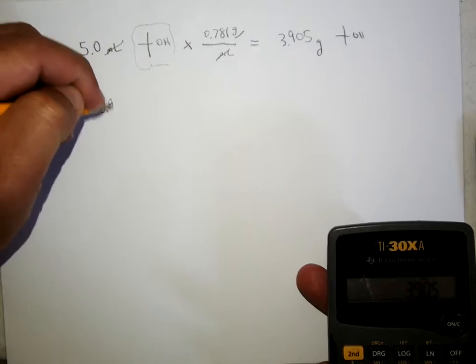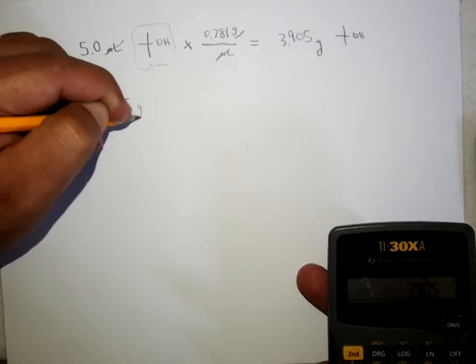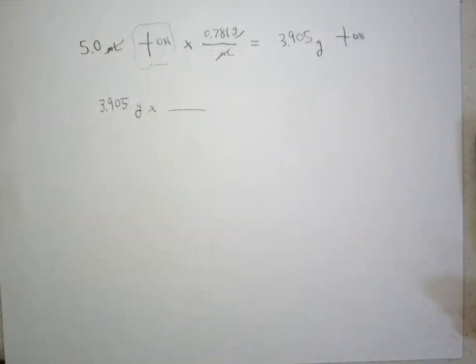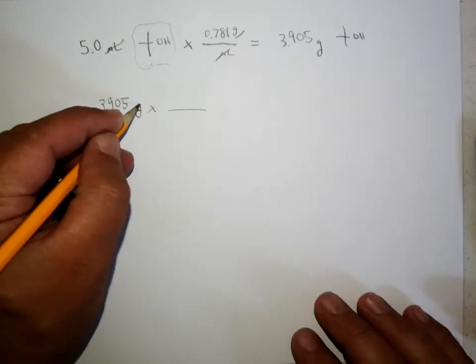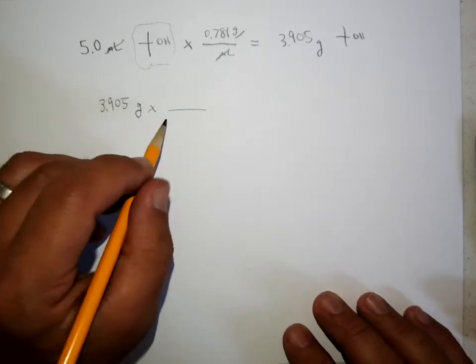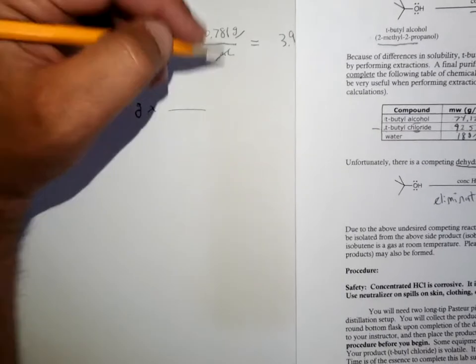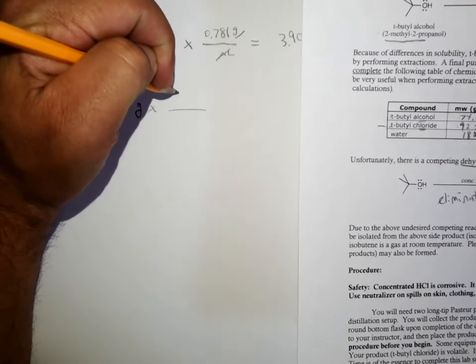We are going to worry about converting to moles, because stoichiometric calculations are not done with volumes unless you're dealing with gases. They're not done with masses because the balanced chemical reaction is written in moles of materials, so we have to convert to moles. So the molecular mass of the t-butanol is 74.12 grams per mole.